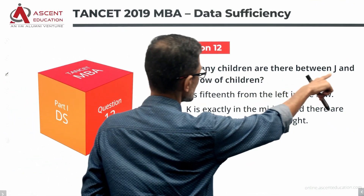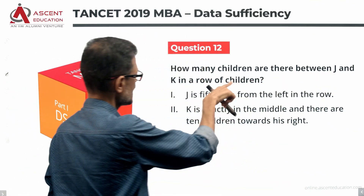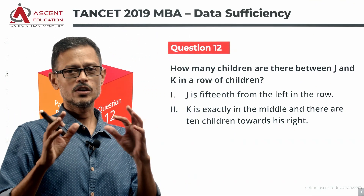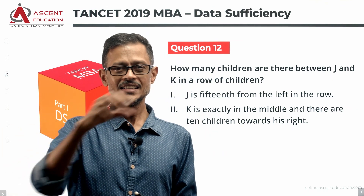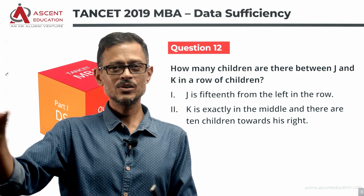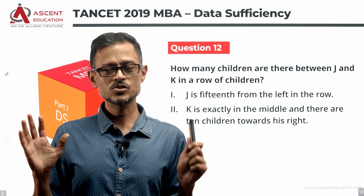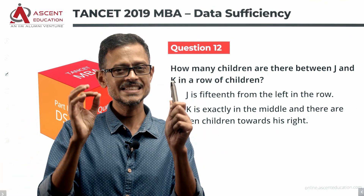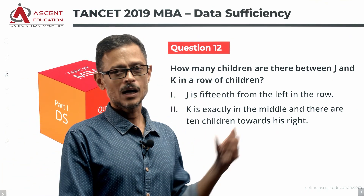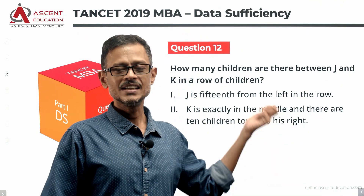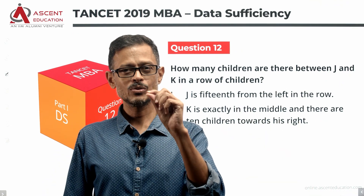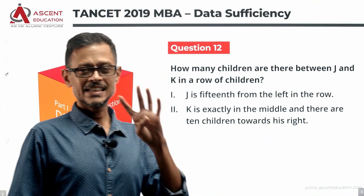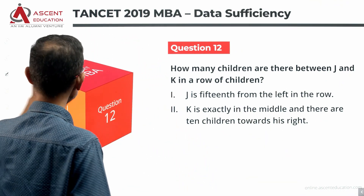How many children are there between J and K? Let's look at the statements and the four answer options.